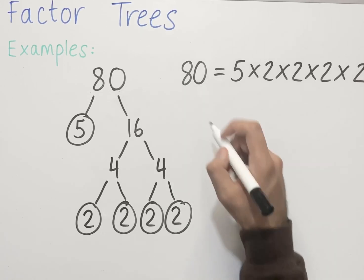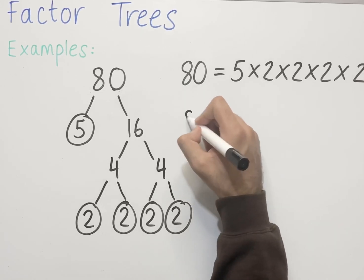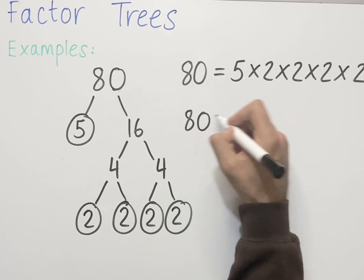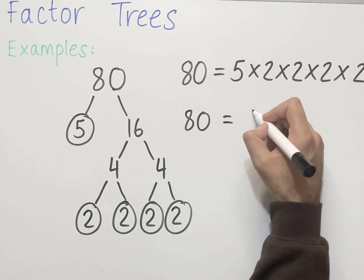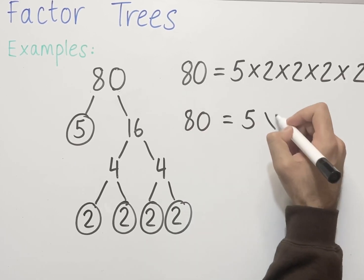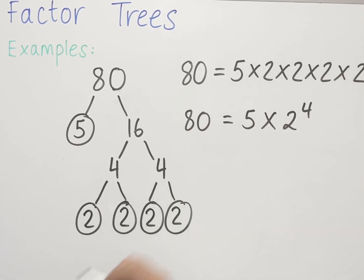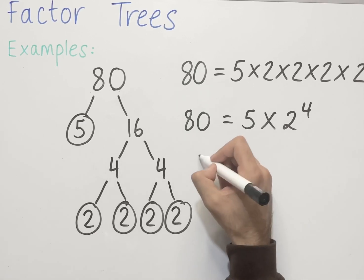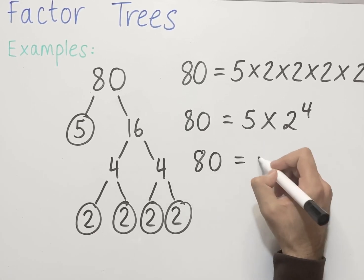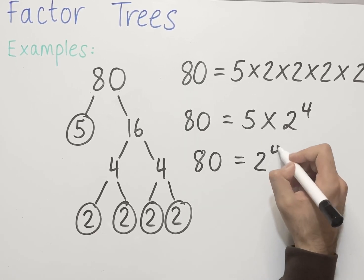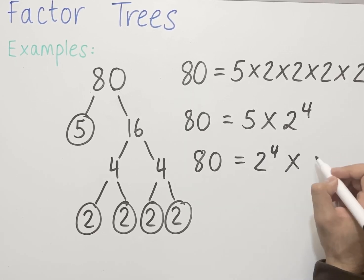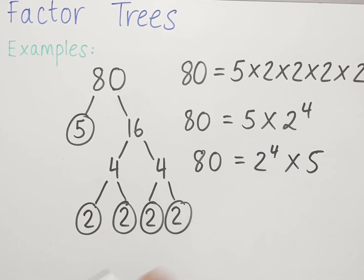If we write this in index form, we have 80 equals 5 times 2 to the power of 4, which is essentially the same as 2 to the power of 4 times 5.